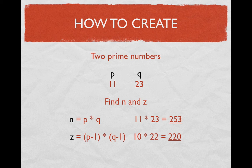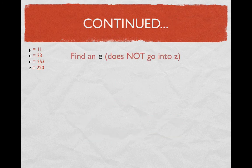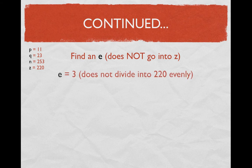The next step is to find an E, which is a number that does not go into Z. This E value will be used in the equation to encrypt the message. The objective is to find a number that does not go into 220 evenly — I'll choose the number 3, because 3 doesn't go into 220 evenly.